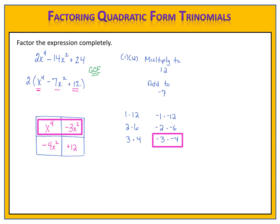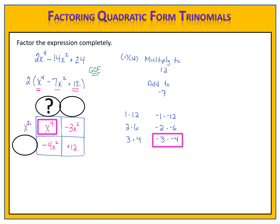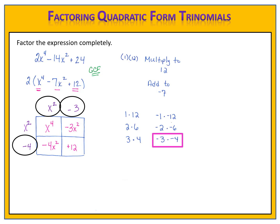Now I factor across the top. The greatest common factor of x to the 4th and minus 3x squared is simply x squared. I use multiplication to fill in the other spots. x squared times x squared equals x to the 4th. x squared times negative 3 equals negative 3x squared. x squared times negative 4 equals negative 4x squared. I do my check: negative 3 and negative 4 multiply to 12. ✓ That gives me the binomials x squared minus 3 and x squared minus 4.